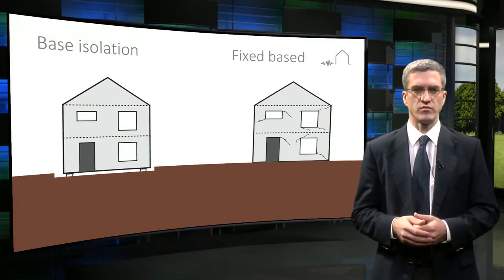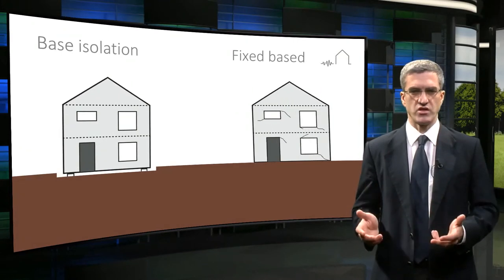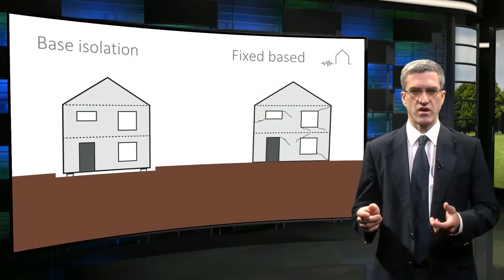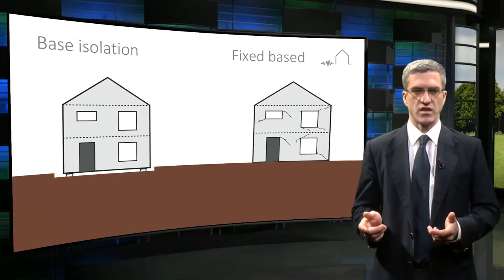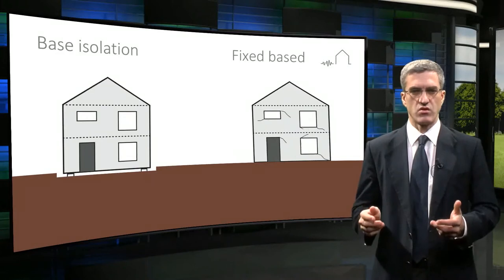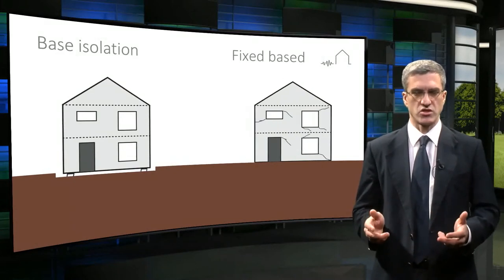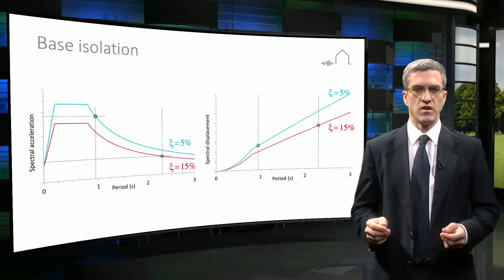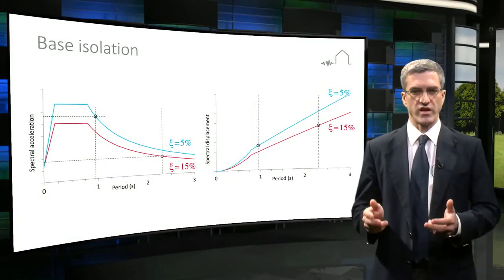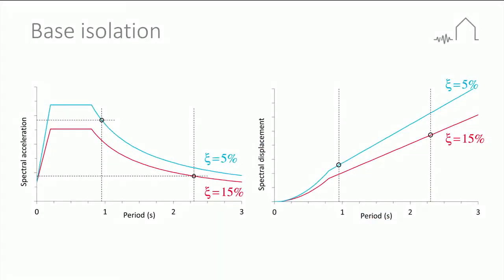You will have noticed from the animation that the vast majority of deformations happen across the isolators. As a rule, base isolation reduces rather than eliminates horizontal seismic demands on structures. A base isolation system places the building on a horizontally flexible base, which means that the effective natural period of the system becomes longer. You will see that the accelerations and therefore forces are much lower at these longer periods. Base isolators also typically have higher levels of damping to reduce isolator displacements.